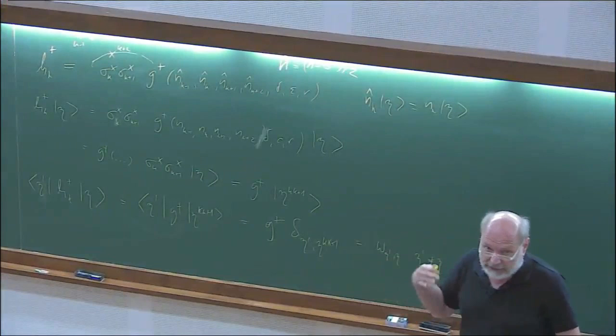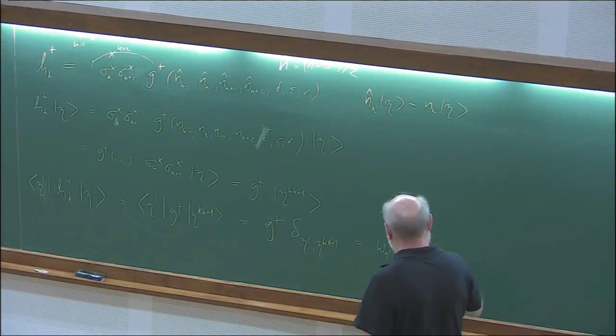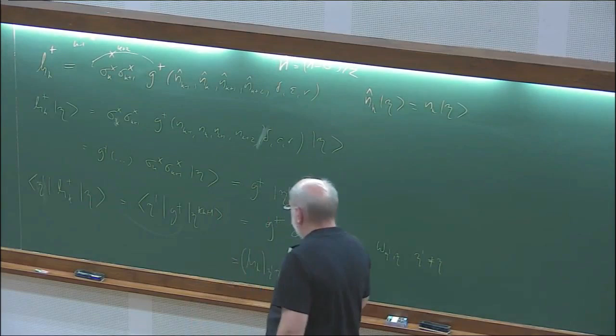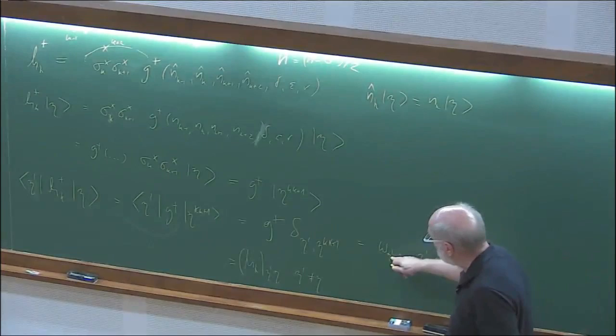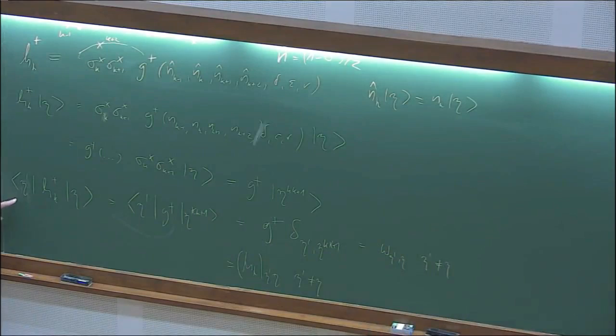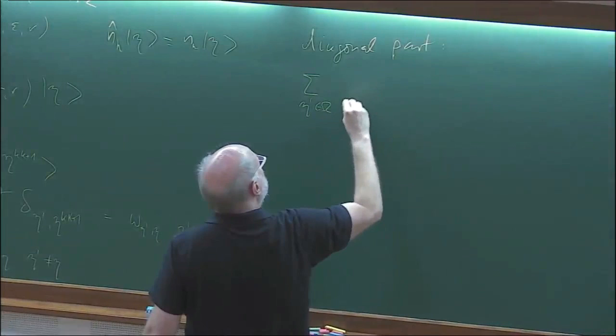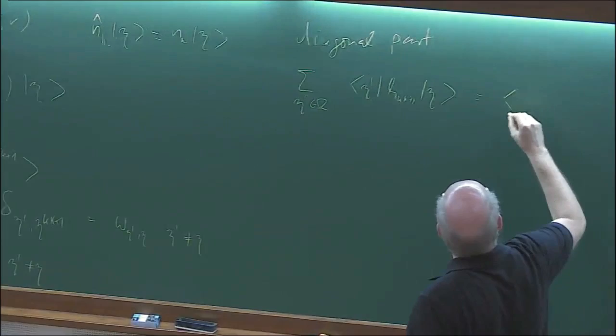Now, what about the diagonal part? We have to conserve probability. The off-diagonal part gives W(eta', eta) for eta' not equal to eta. We have to construct the diagonal part, which is the sum over all eta' of these matrix elements.